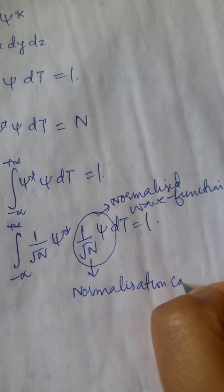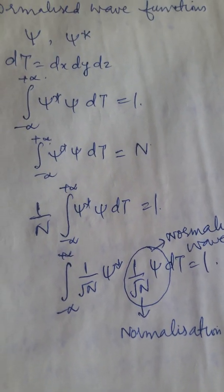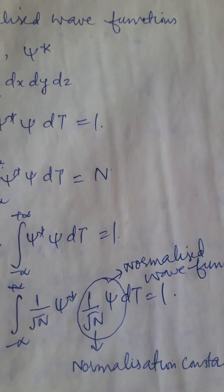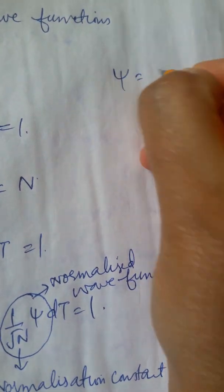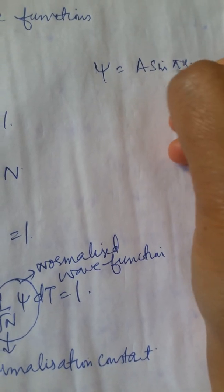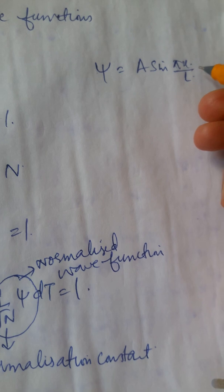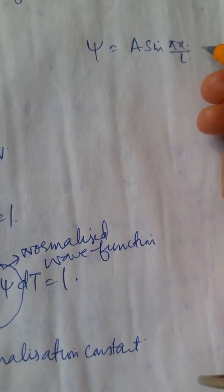Now, let us pick up an example to understand the same. For example, you have a particle in a one-dimensional box whose wave function is given by ψ = A sin(πx/L). Previously you have solved certain examples of this kind, so it will be easy for you to follow this.